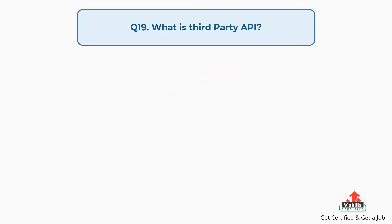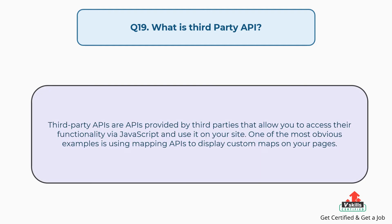Question number nineteen: What is third-party API? Third-party APIs are APIs provided by third parties that allow you to access their functionality via JavaScript and use it on your site. One of the most obvious examples is using mapping APIs to display custom maps on your pages.